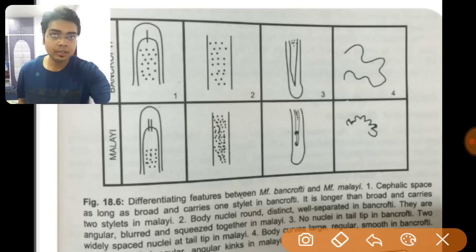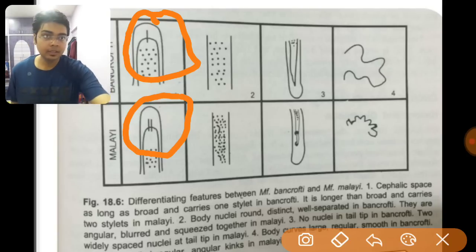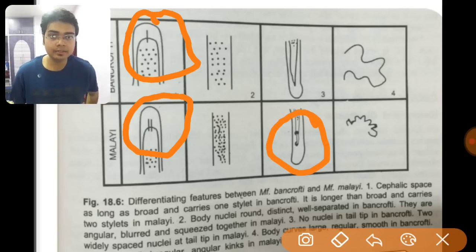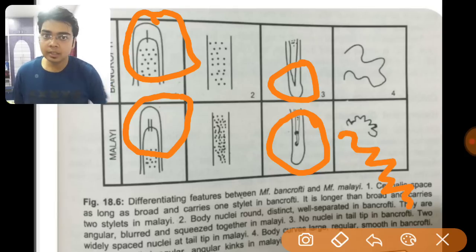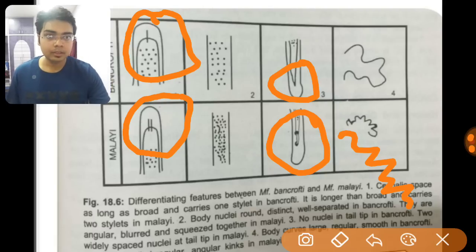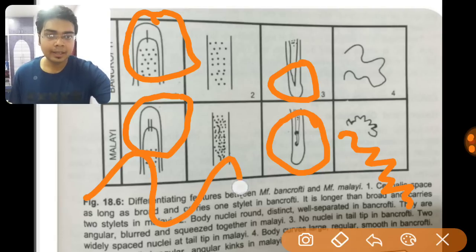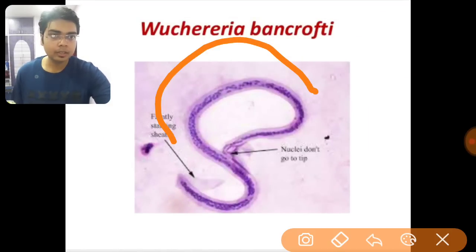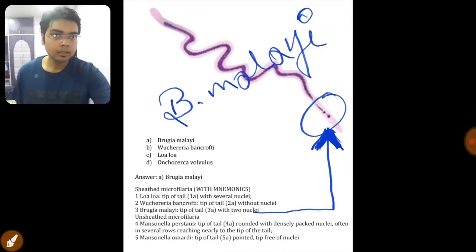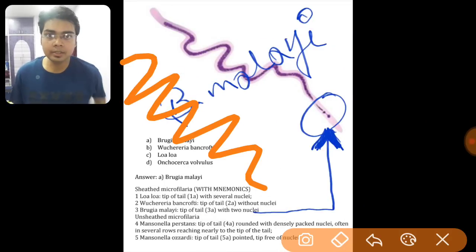Here in the diagram you can confirm: bancrofti is equally wider and longer, but Brugia malayi is more longer than wider. You can also see the two distinct nuclei in Brugia malayi and no nuclei in bancrofti. A third differentiating point is that Brugia malayi has more acutely turned, irregular bends, while Wuchereria bancrofti has more regular bends. So Brugia malayi shows irregular acute turns, while bancrofti has regular bends.